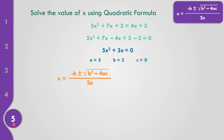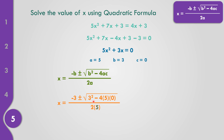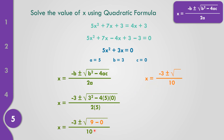Replacing values into the quadratic formula: negative times 3, plus or minus the square root of 3 squared minus 4 times 5 times 0, all over 2 times 5. Solving: negative 3, plus or minus: 3 times 3 equals 9. Negative 4 times 5 times 0 equals 0. Any number multiplied by 0 is 0. 2 times 5 equals 10. So: 9 minus 0 equals 9. X equals negative 3, plus or minus the square root of 9 equals 3, all over 10.